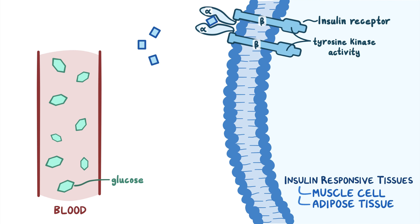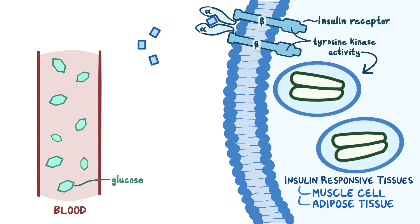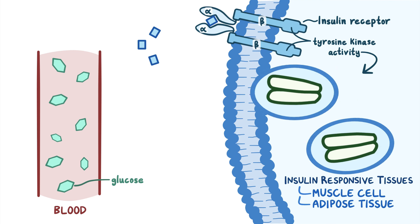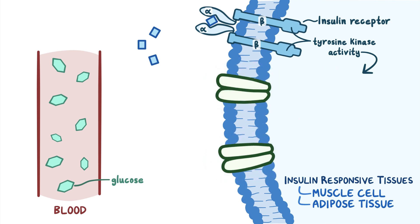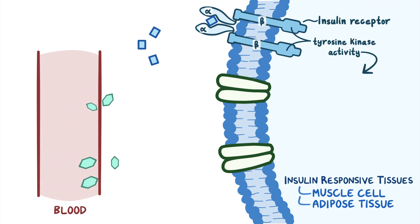Once stimulated, insulin receptors cause intracellular storage vesicles which contain glucose transport proteins called GLUT4 to fuse with the cell membrane. Next, the GLUT4 proteins embed themselves into the membrane and allow glucose to move into the cell.